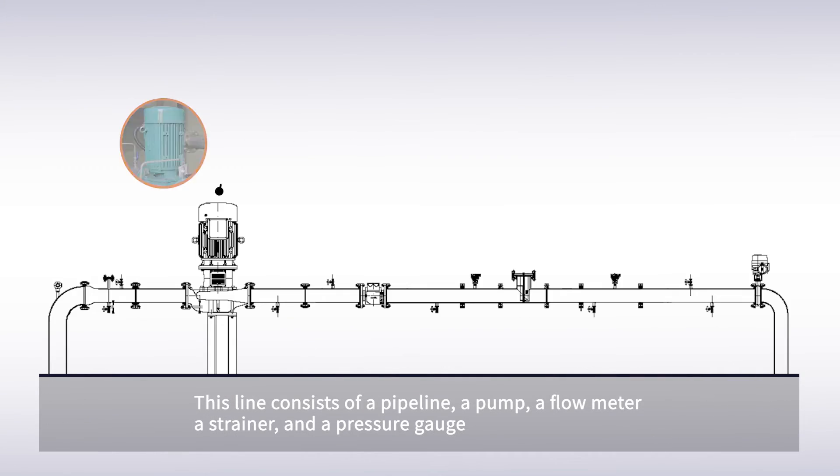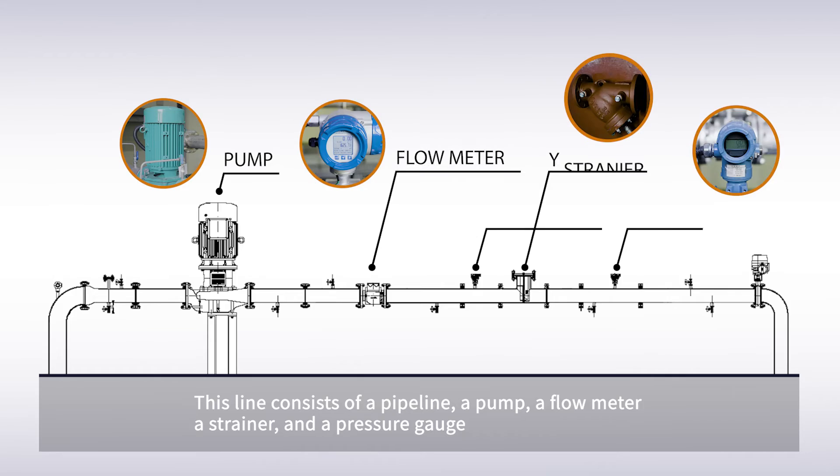This line consists of a pipeline, a pump, a flow meter, a strainer, and a pressure gauge.